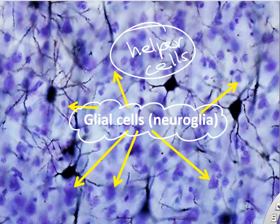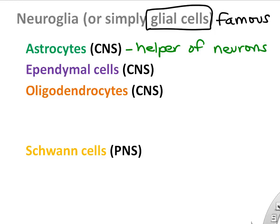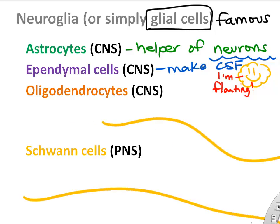We have many helper cells in our nervous tissue — in both the brain and peripheral nerves. These helper cells are called glial cells. One of the most famous is the astrocyte, found only in the brain and spinal cord. Another type is the ependymal cell, found in the brain, which helps make cerebrospinal fluid that cushions the brain and spinal cord.